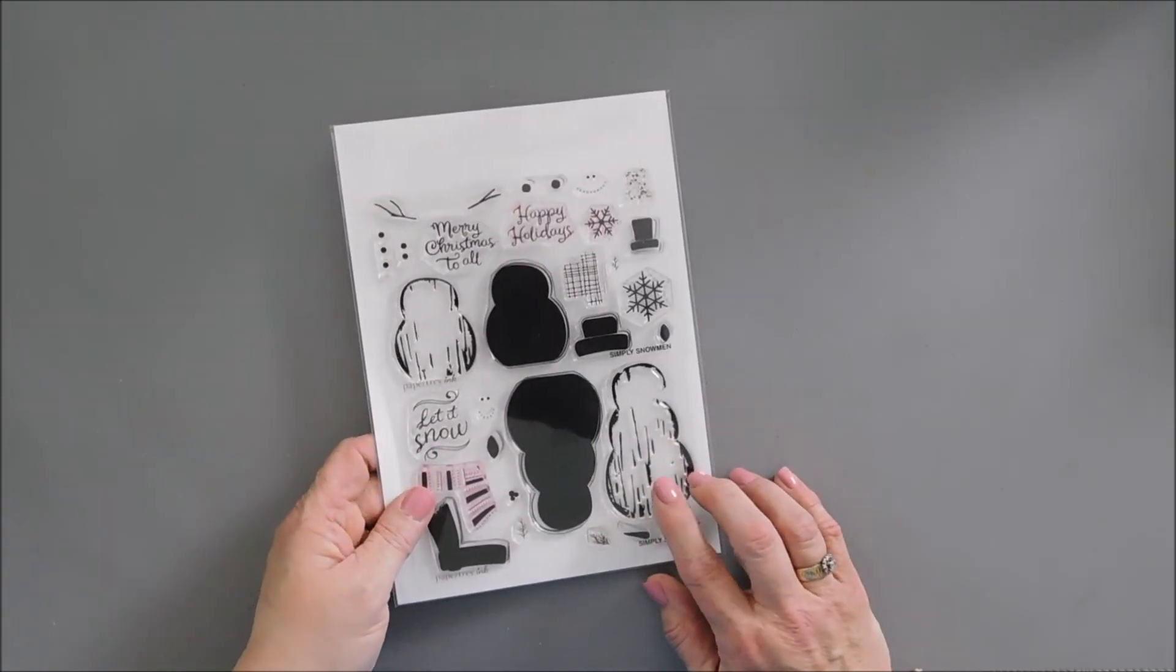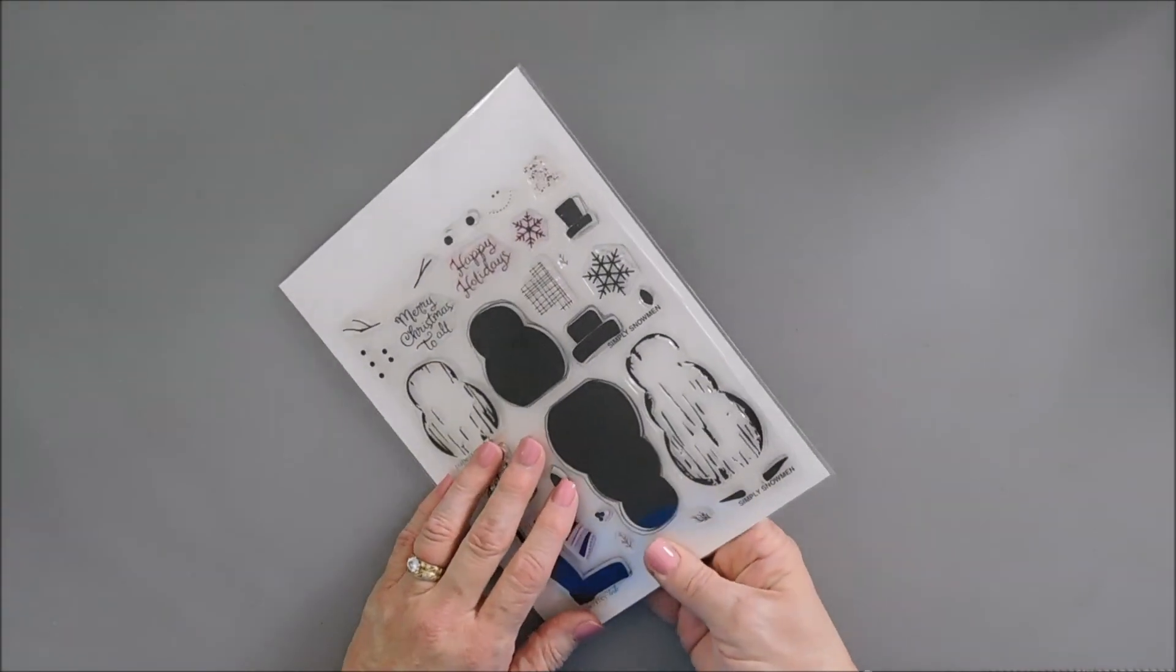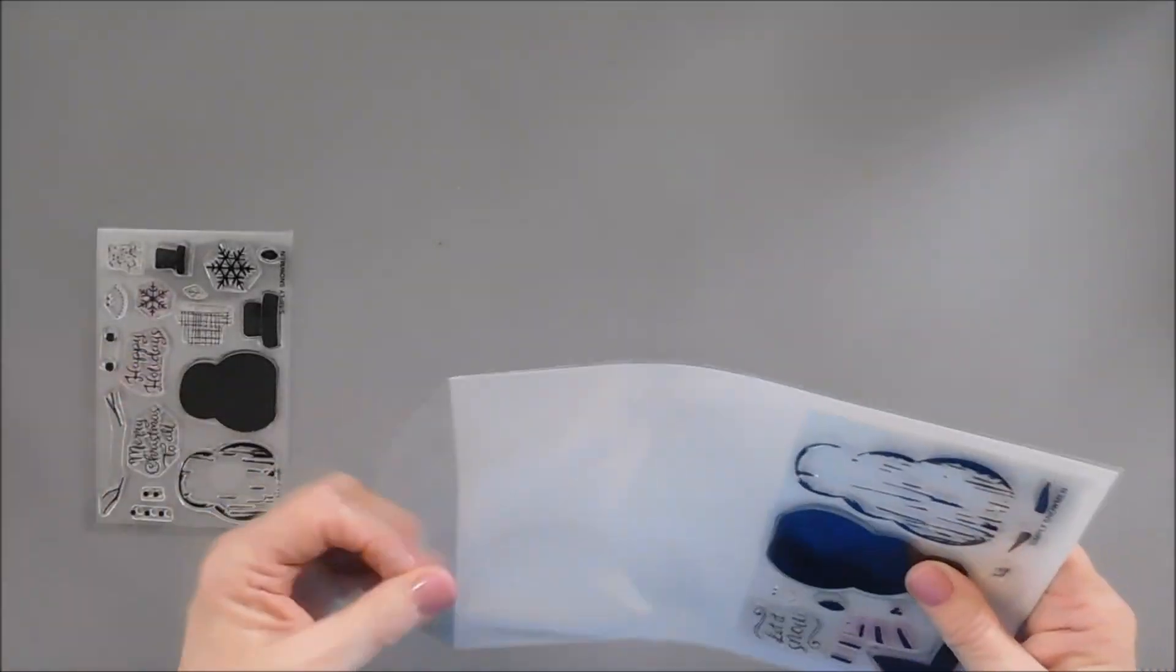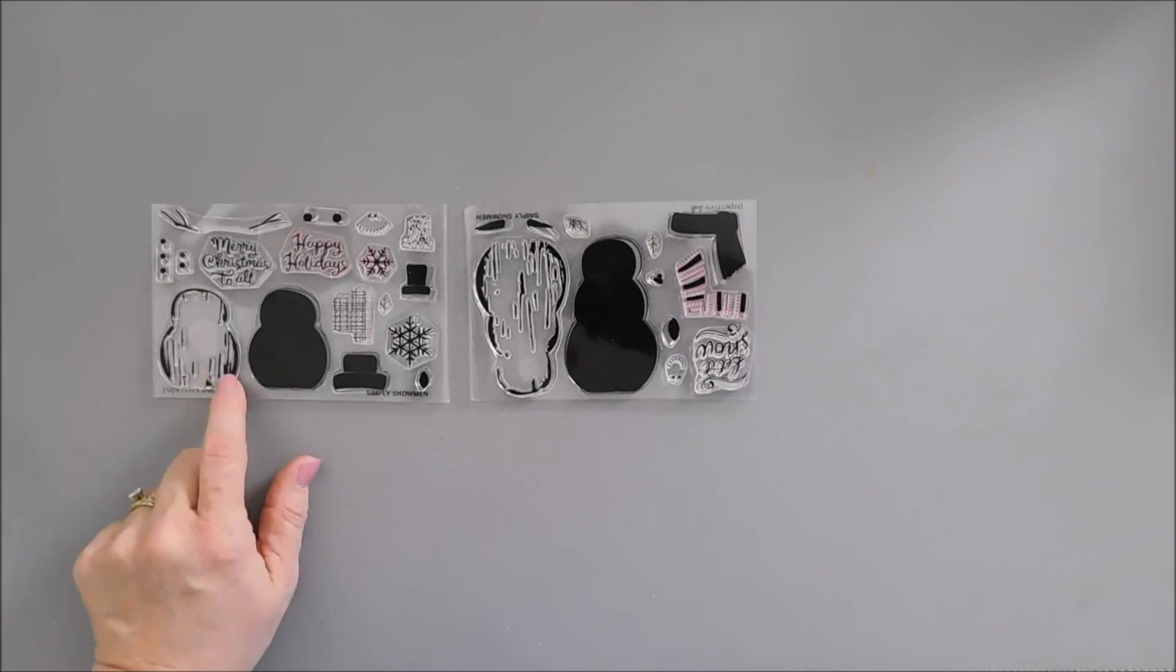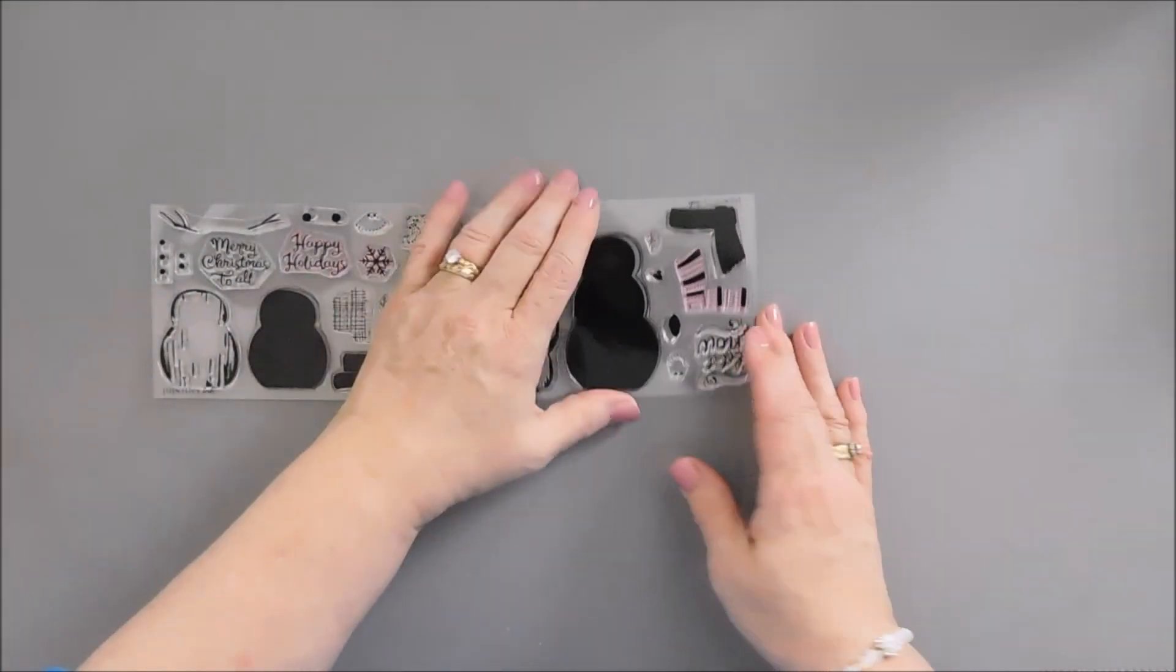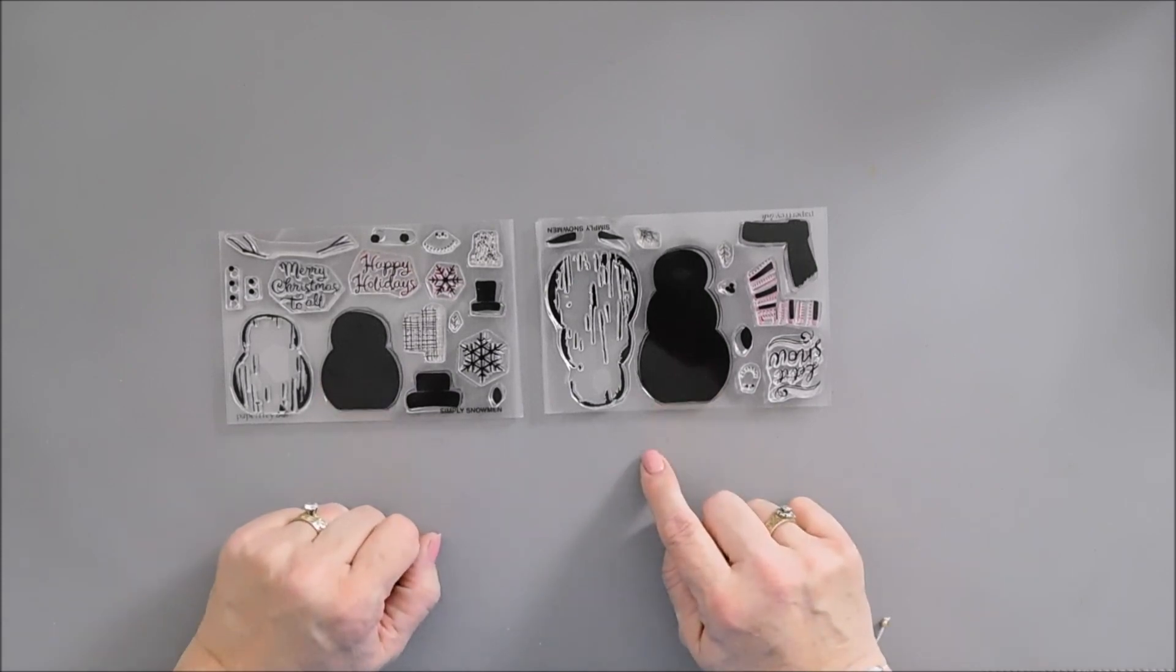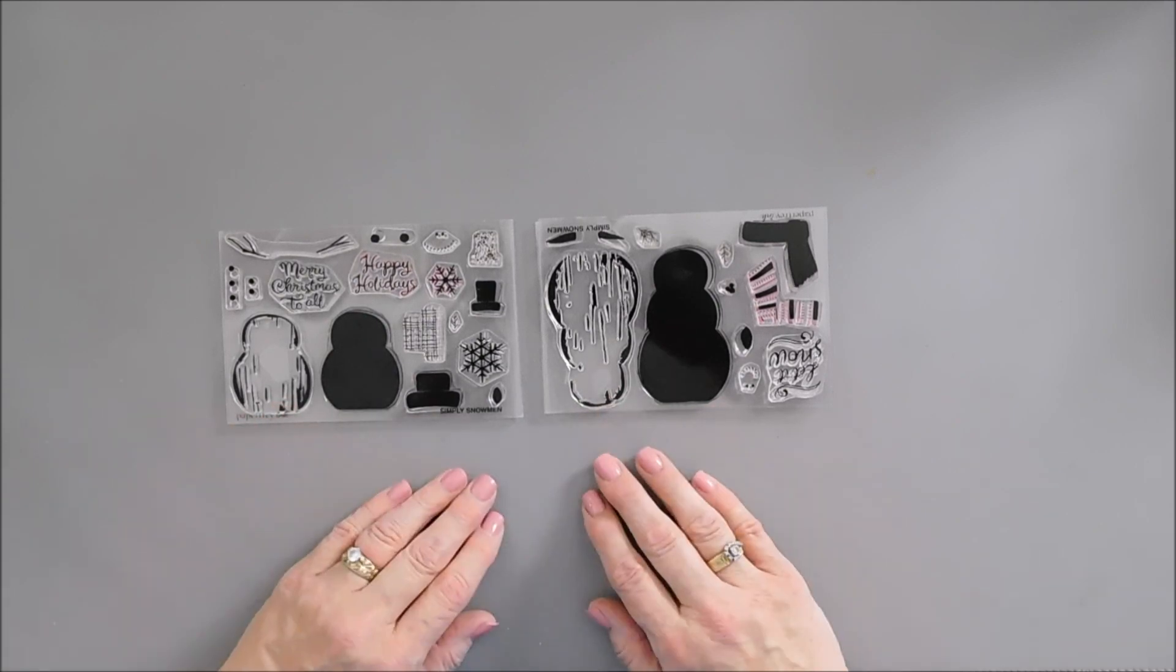We're going to go ahead and jump in and do a little bit of stamping. I do want to mention that there is a coordinating die set to go with the Simply Snowman stamp set. There's a three snowball snowman and a two one. We're just going to use the smaller two one. This is a layering stamp set but we're not going to use the first layer. We're going to use just the layer that looks like wood grain, which I think is super neat.